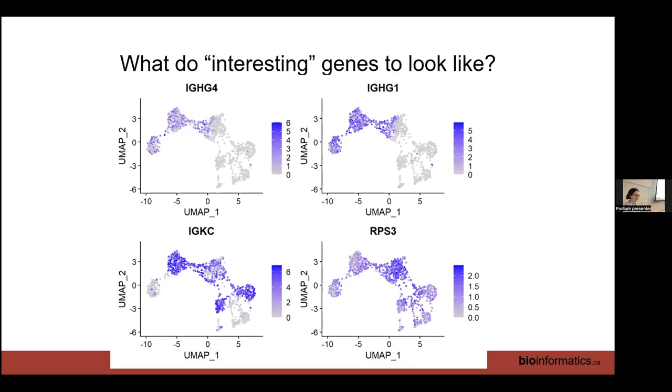What does an interesting differentially expressed gene look like? Here's some examples. Three of these are pretty obviously biologically relevant: three immunoglobulin genes and a ribosomal gene. Those three immunoglobulin genes are relevant. The ribosomal gene is probably not biologically relevant. What characteristics do these have? They have high variance. Some cells they're highly expressed, some cells they're lowly expressed or absent entirely. They can be correlated with each other. IGHG4 is super highly correlated with IGHG1 because they're both expressed in the same cells. And they're relevant to the known biology. These cells are B cells, this is the BCR receptor.